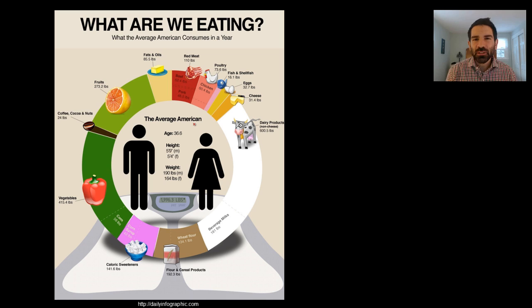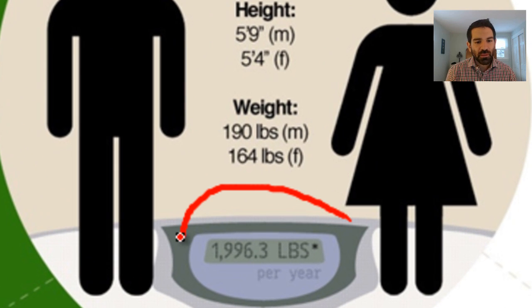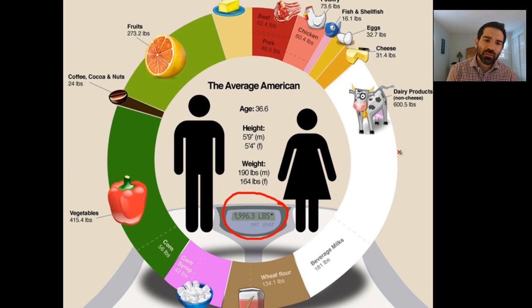So that takes us to this really interesting infographic. It's called What Are We Eating? And it's about the average American diet. The most interesting part to me is right here in the middle. And that is, in the middle of the scale, it shows that the average American eats almost 2,000 pounds of food every year. The outside of this diagram shows the makeup of that food, what types of different foods that the average American is eating.